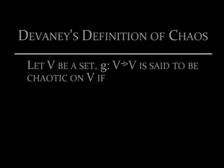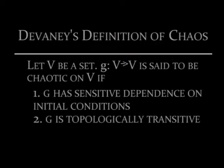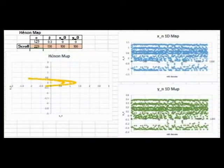Devaney's definition of chaos gives the following: let V be a set, G from V to V is said to be chaotic on V if (1) G has sensitive dependence on initial conditions, and (2) G is topologically transitive. In other words, not only does a set have to be very dependent on its initial conditions, with slight variations resulting in very different results, but it also has to fill the entire region it's assigned — its entire universe.